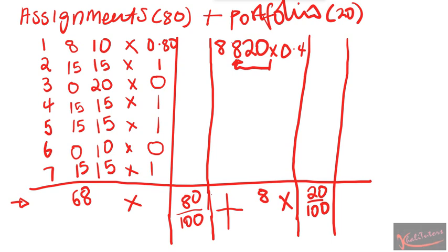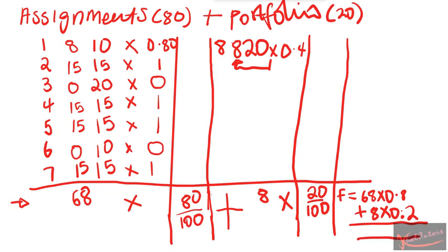Your final mark is going to be: 68 times 0.8 plus 8 times 0.2. Then your final mark for this module will be 56%. This will be your final mark — if you got 40 for your portfolio and 68 for your class mark.